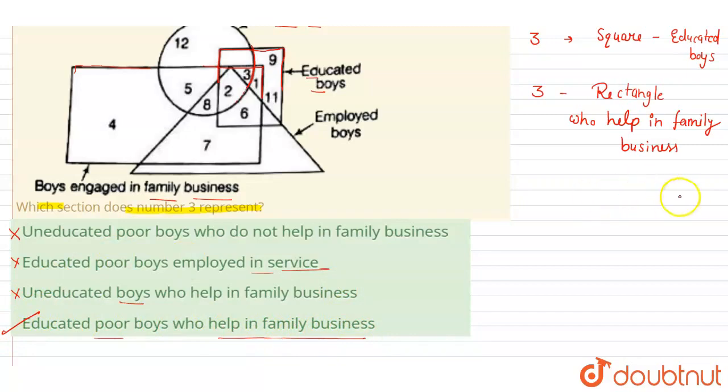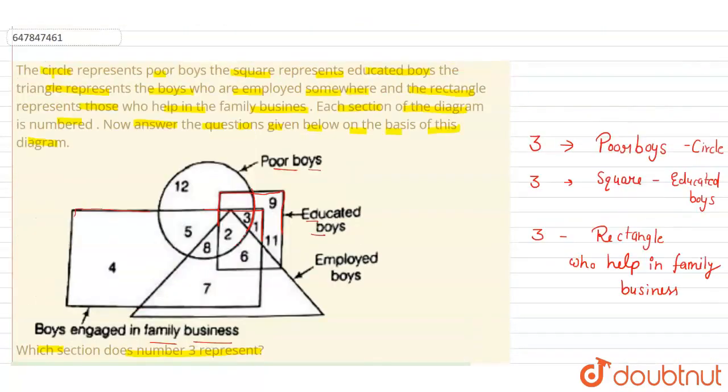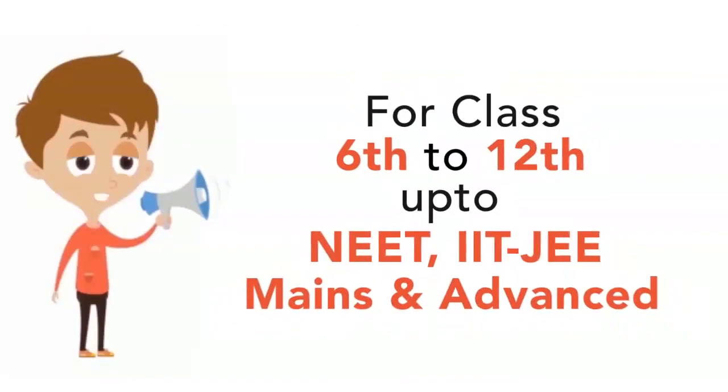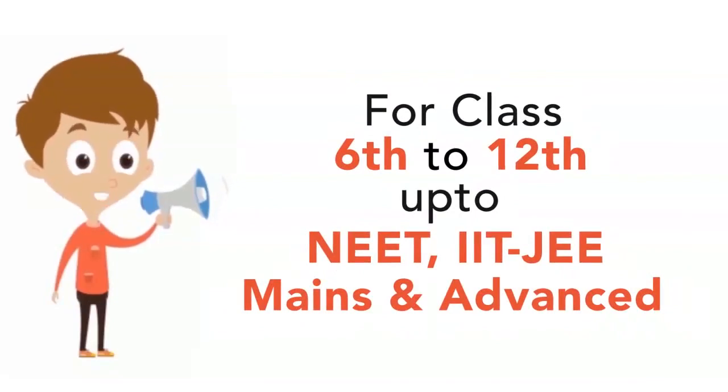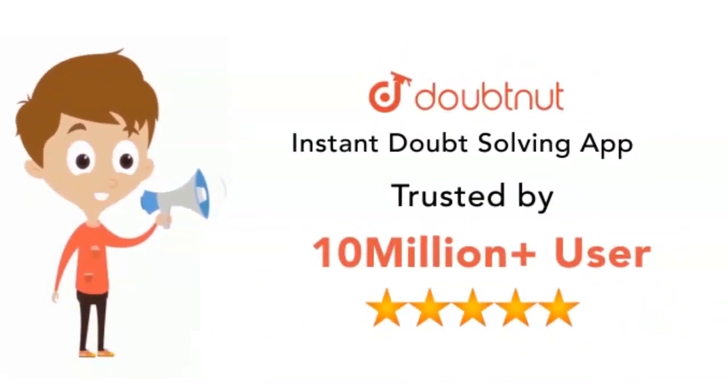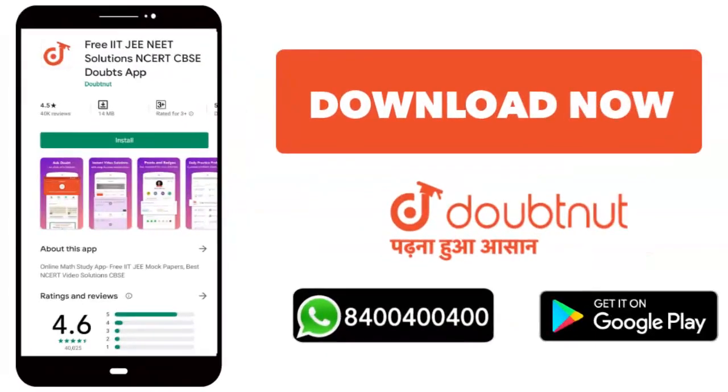Option D is your right answer. Thank you. Classes 6 to 12, NEET, JEE Mains and Advanced level. More than 10 million students. Download Doubtnut app or WhatsApp your doubts to 8444.